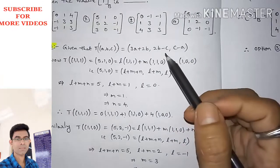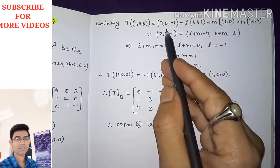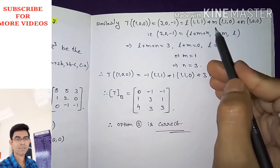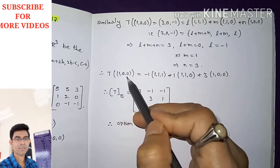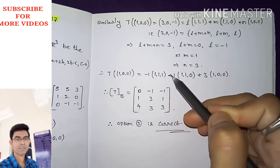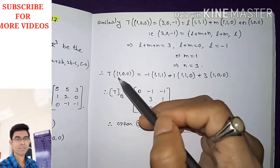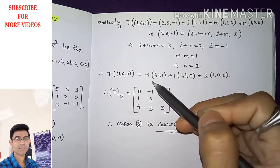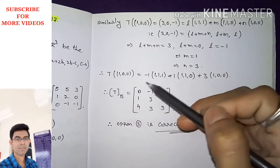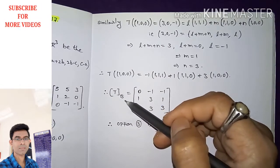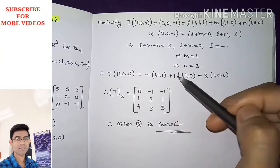For the third column, T(1,0,0) = (3,0,−1), substituting A=1, B=0, C=0. Solving in the same fashion gives L=−1, M=1, N=3. Therefore T(1,0,0) = −1·(1,1,1) + 1·(1,1,0) + 3·(1,0,0), and the coordinates of T(1,0,0) are (−1,1,3). This is the third column of the matrix.